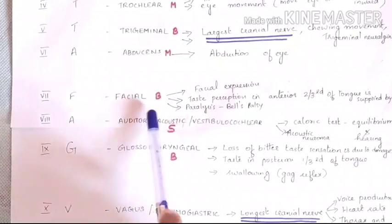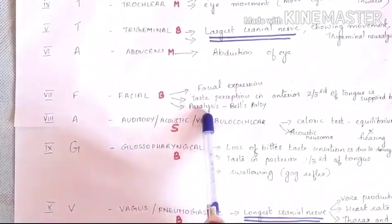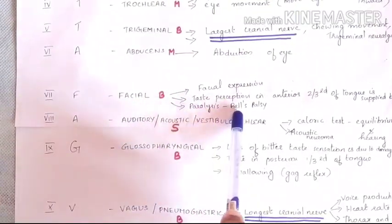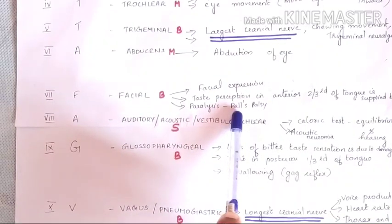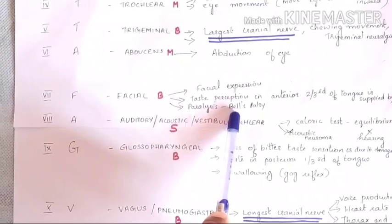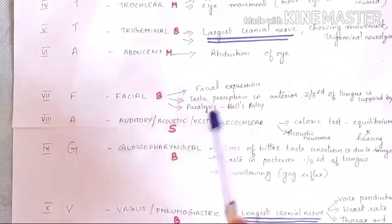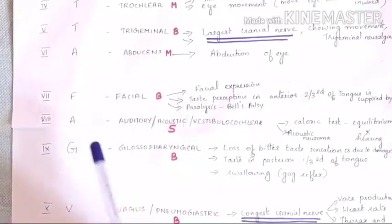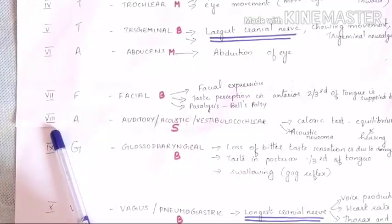Paralysis of the seventh cranial nerve — the facial nerve — causes Bell's palsy. This is a commonly asked examination question.